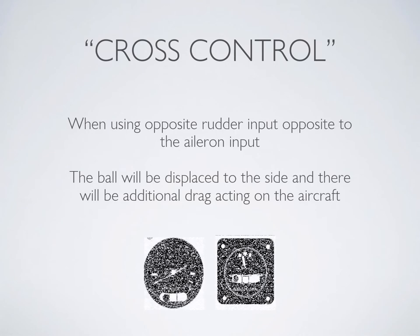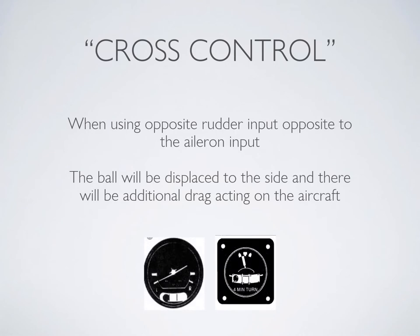We often use the term cross control to describe the configuration of a slip. This means that rather than coordinating the use of the rudder and the ailerons, we use opposite rudder input to aileron input.